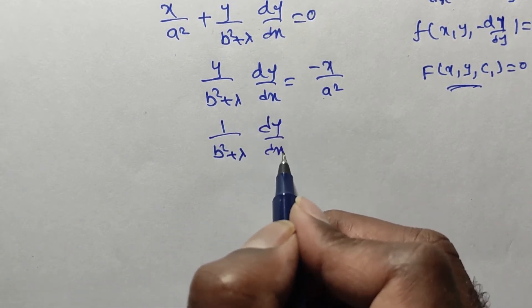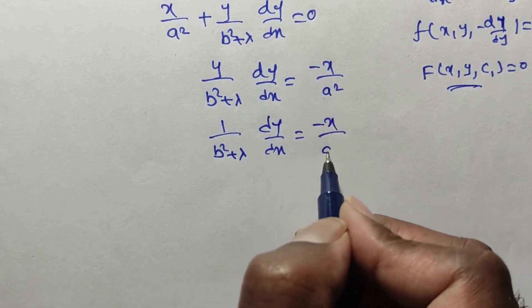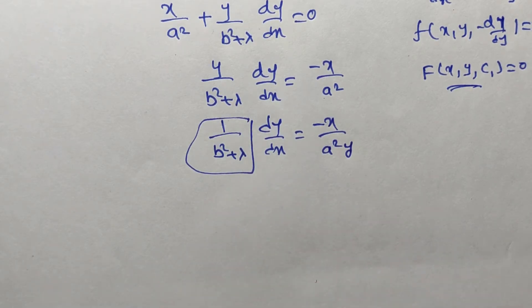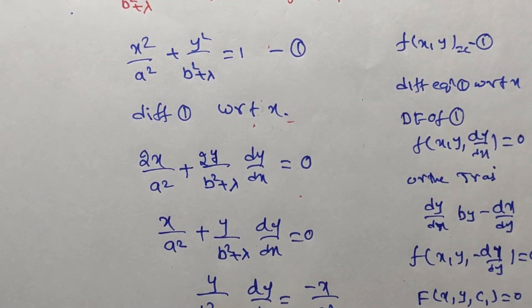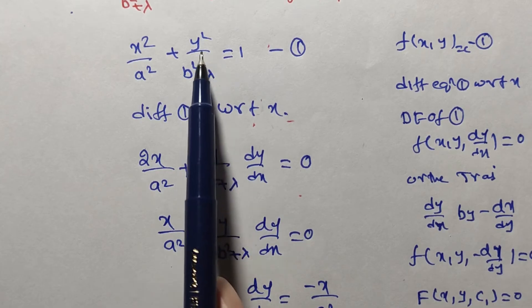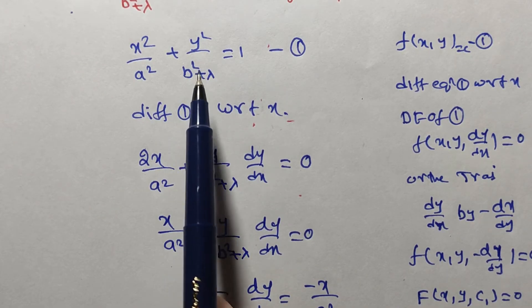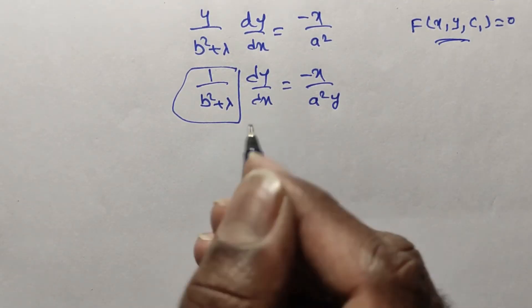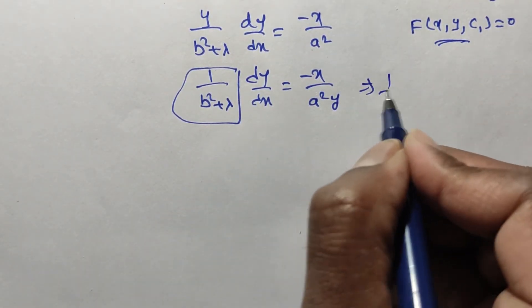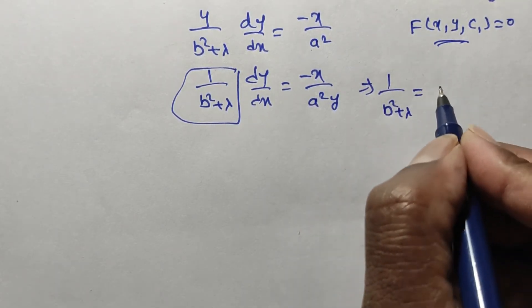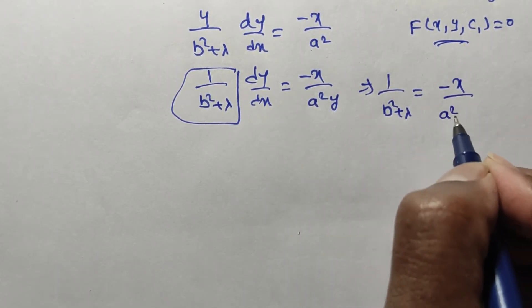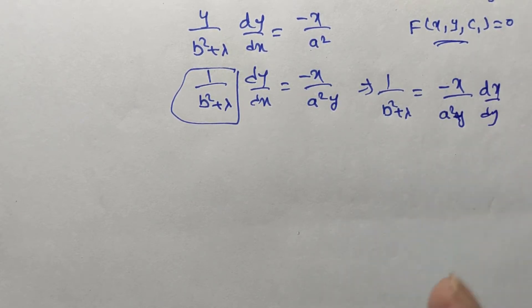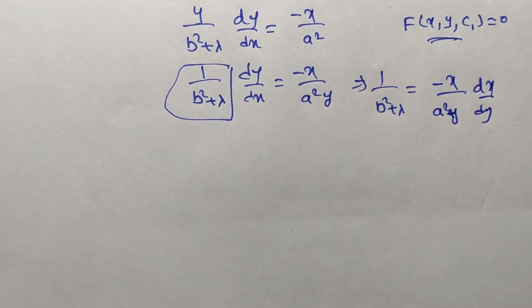So dy/dx = −x/(a²y). We only need this part because 1/(b² + λ) appears in equation 1. Writing it as 1/(b² + λ) = −x/(a²y) · dx/dy, we substitute this value back into equation number 1: x²/a² + y² · [−x/(a²y) · dx/dy] = 1.